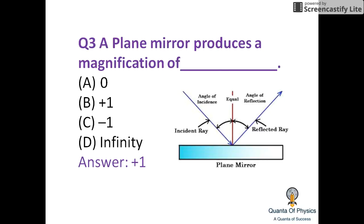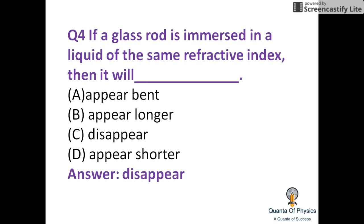Question three: a plane mirror produces a magnification of unity. If a glass rod is immersed in a liquid of the same refractive index, then it will disappear.